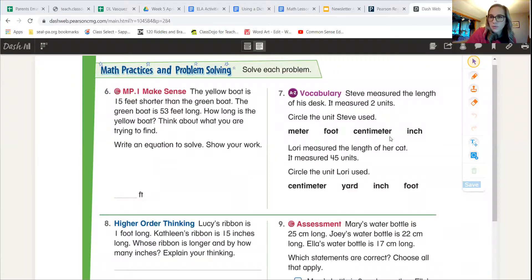Alright, so if you look at number seven it's using your vocabulary words which are our measurement words. So we're gonna read the problem first and then work through it.